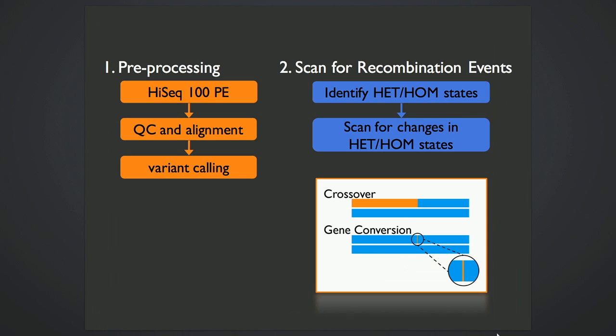Very large reciprocal transfers indicate crossing over has happened, and these small non-reciprocal transfers indicate gene conversion. So after SNP calling, I have a pipeline of Perl scripts that looks at every SNP in each individual and identifies whether that individual is heterozygous or homozygous at that SNP. And then I just scan along the chromosome for changes in heterozygosity and homozygosity.